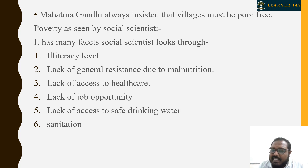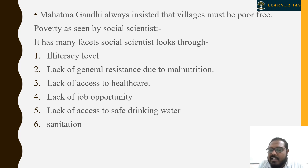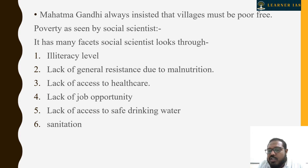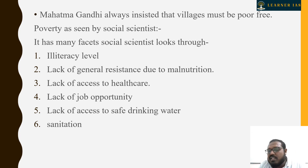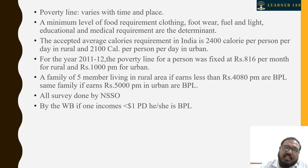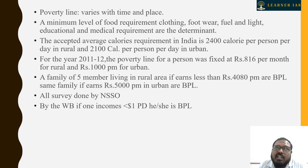Social scientists कहते हैं — illiteracy level जितना ज़्यादा होगा, poverty उतना ज़्यादा होगी। Lack of general resistance due to malnutrition — उनके अंदर resistance नहीं होता, वो जल्दी weak हो जाते हैं, जल्दी बीमार हो जाते हैं। Health facilities जहाँ पर नहीं पहुँच पाती यह भी एक reason है जिसके लिए लोग बीमार रहते हैं और सही से काम नहीं कर पाते।